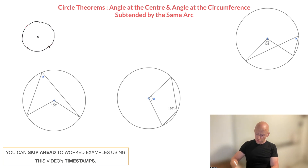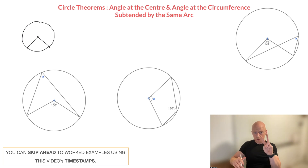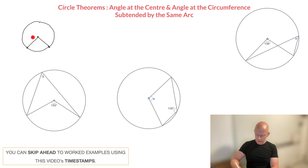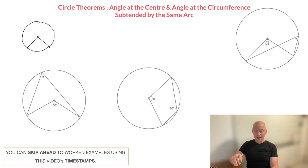Now if I join each of these two points to the center of the circle, like this and like that, then this creates two angles at the center of the circle — one of which is right here and the other is this larger reflex angle right here. For the theorem or rule that we work with in this video, it's very important to recognize which arc forms each of these two angles.